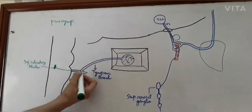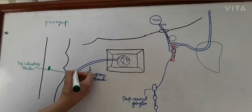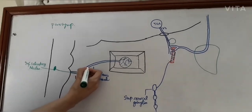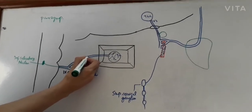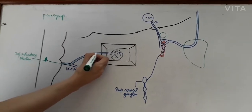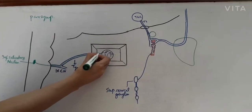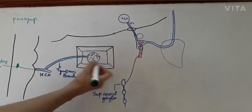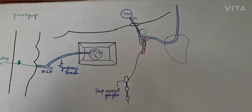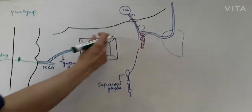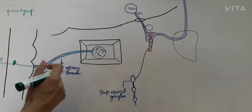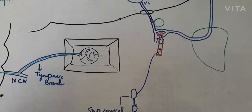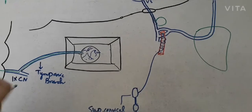After that, the glossopharyngeal nerve gives a tympanic branch. These parasympathetic secretomotor fibres go along with it and enter the middle ear cavity, on the medial wall of the middle ear. The tympanic branch with other branches forms the tympanic plexus in the ear.